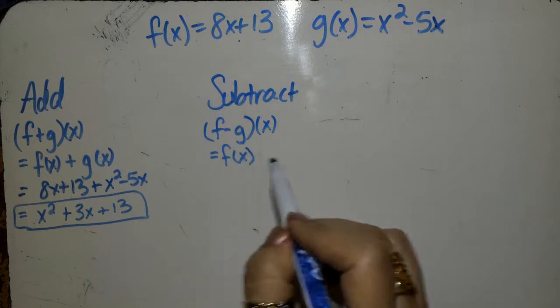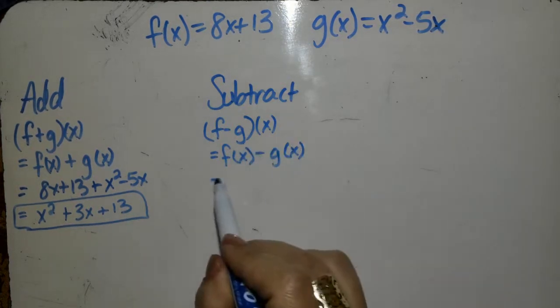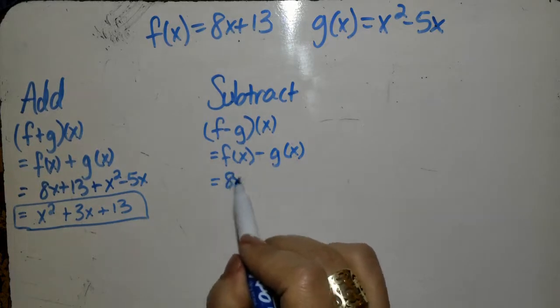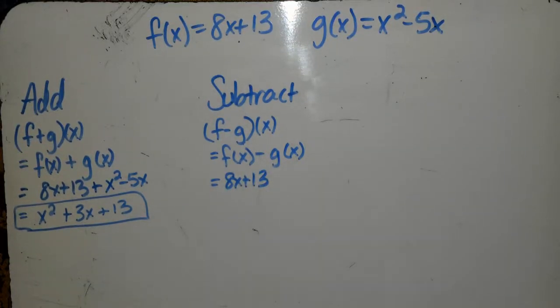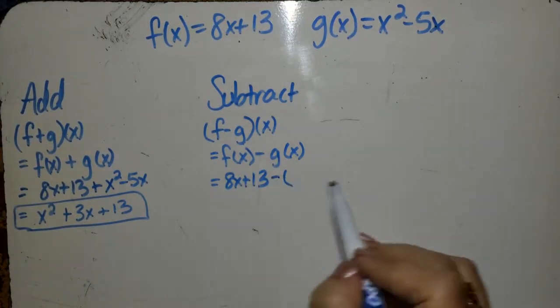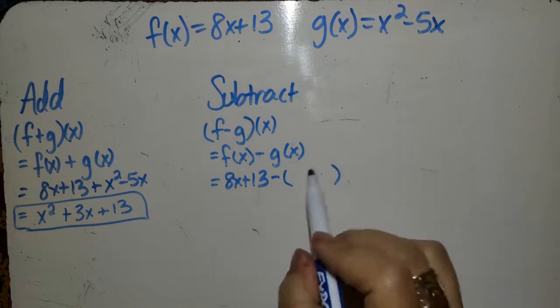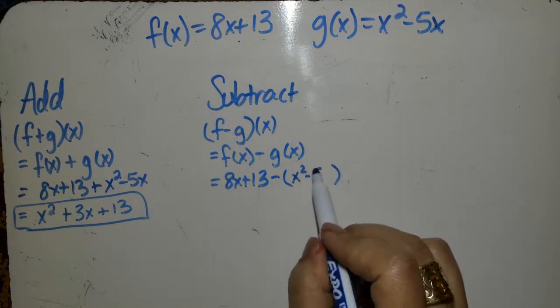f of x minus g of x. So f of x is 8x plus 13, minus, I'm going to put in parentheses, g of x, which is x squared minus 5x.